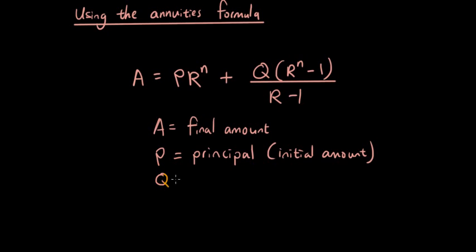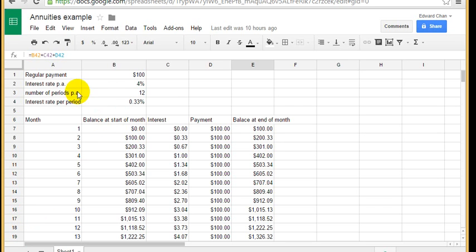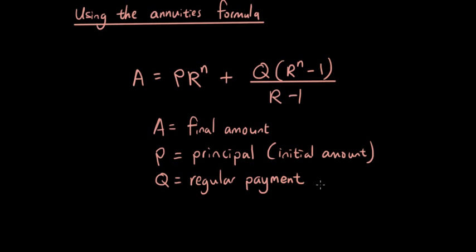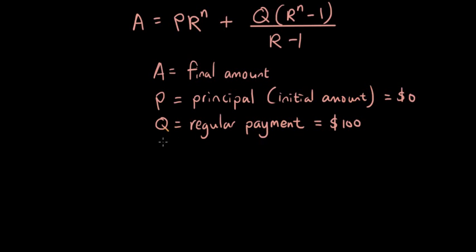Q is the regular payment amount and you can see right now we are saving a hundred dollars into our account every month so Q is going to be a hundred and our principal was zero.